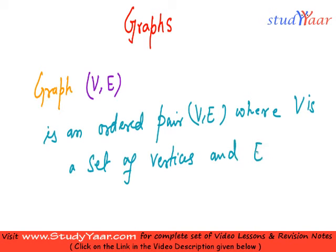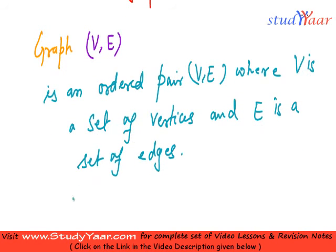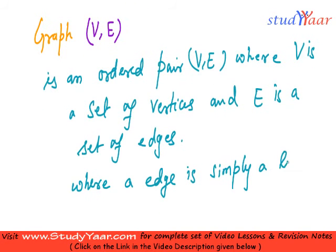And E is a set of edges. What is edges? An edge is simply a line joining pair of vertices or a vertex to itself.